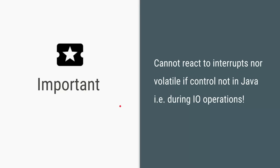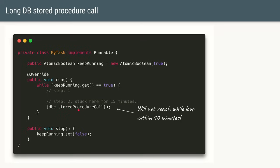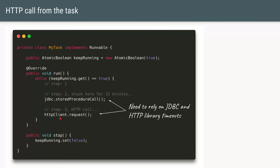All earlier examples assumed our task is running Java operations as a set of steps, checking for interrupts or volatile changes between each step. But what if the task is doing IO operations? For example, if our task makes a stored procedure call — a database operation — and that stored procedure is very slow and takes more than 10 minutes, the thread will be stuck at that point and never get a chance to reach the while loop to check for an interrupt or volatile change. So it's important to confirm these are Java operations, not IO. For IO operations, libraries like JDBC and the HTTP client library have timeout methods where you specify the maximum time to wait for the operation.